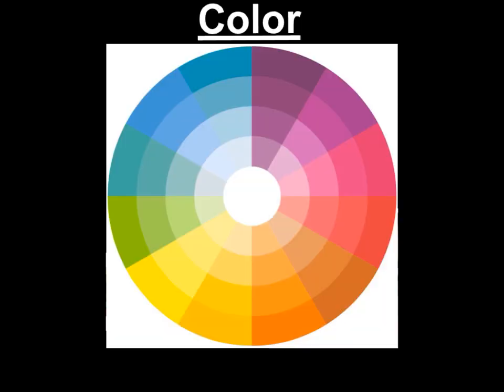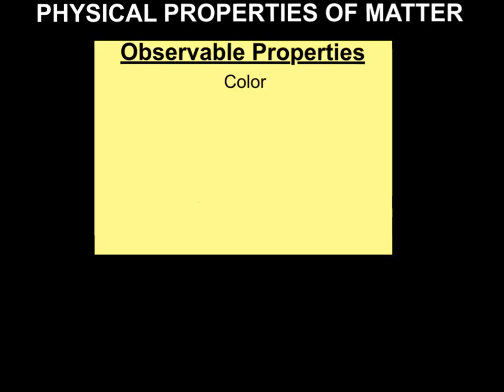Color is the first observable physical property of matter. In your chart, please write color — and yes, spelling counts.